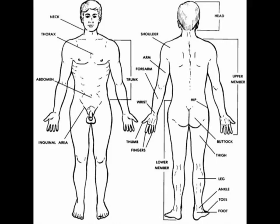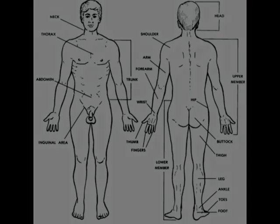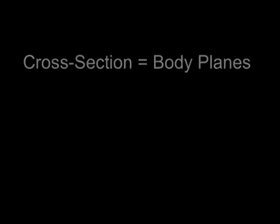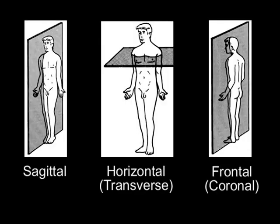Sometimes we look at cross sections of the human body to better understand anatomy. These cross sections are called planes of the body. There are three basic ones: sagittal planes, horizontal planes, and frontal planes.